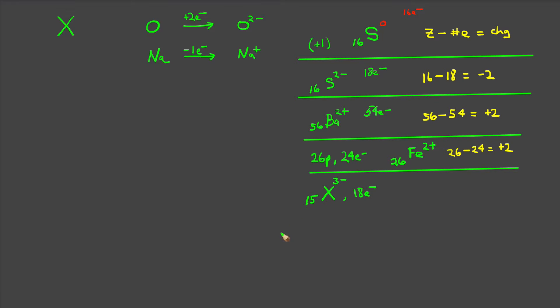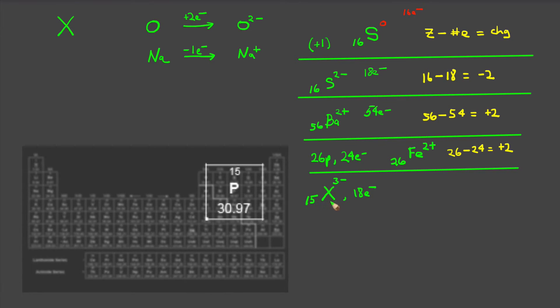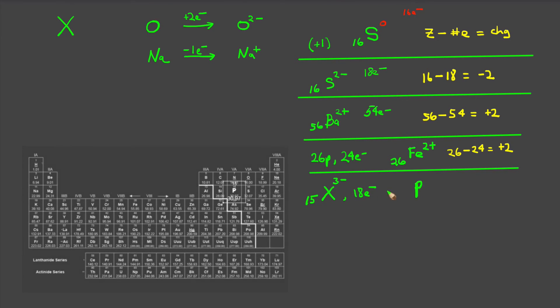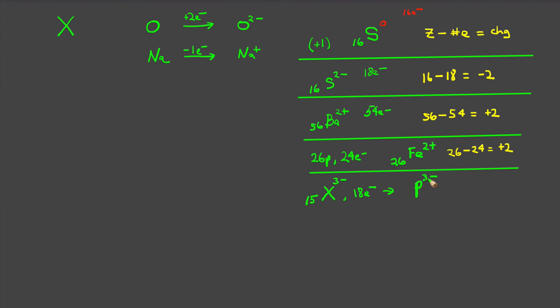or 3 less protons than electrons, which means we have a total of 15 protons. And the element with 15 protons can be seen from the periodic chart to be phosphorus. And so the chemical species is phosphorus with a minus 3 charge, which is known as phosphide ion.